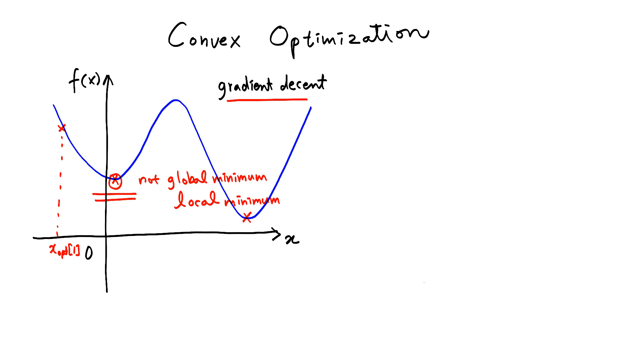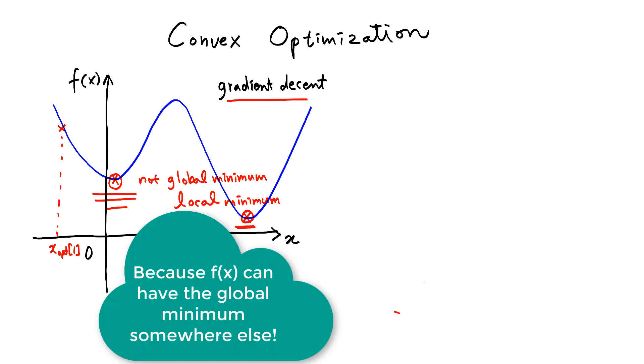We have another minimum here which is lower than this one but the problem is even this one may not be the global minimum that we are trying to find out.